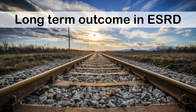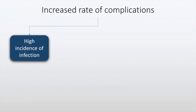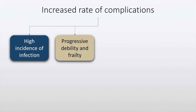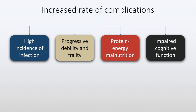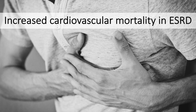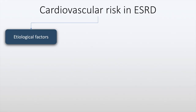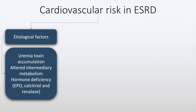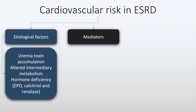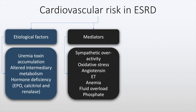The long-term outcomes in end-stage renal disease are associated with increased rate of complications such as increased incidence of infection, progressive debility and frailty in the elderly, protein energy malnutrition, and impaired cognitive function. Also, there is increased cardiovascular mortality in patients with end-stage renal disease and this is because of etiological factors such as uremia toxin accumulation, altered intermediary metabolism, and hormone deficiency. The mediators of such increased cardiovascular mortality include sympathetic overactivity, oxidative stress, angiotensin, endothelin, anemia, and fluid overload.